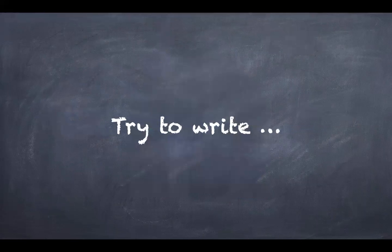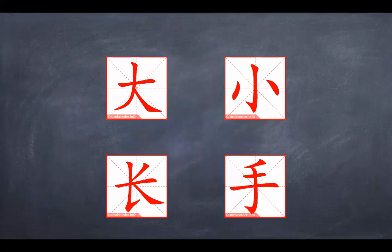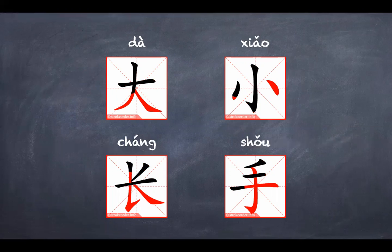Now let's try to write some characters. These are four characters in this lesson: 大 (big), 小 (small), 长 (long), and 手 (hand). This is how you write these characters following the correct stroke order. Remember that when writing Chinese characters, you have to follow the correct strokes — otherwise you're writing them the wrong way. You can pause the video and come back to watch any character you want to learn.